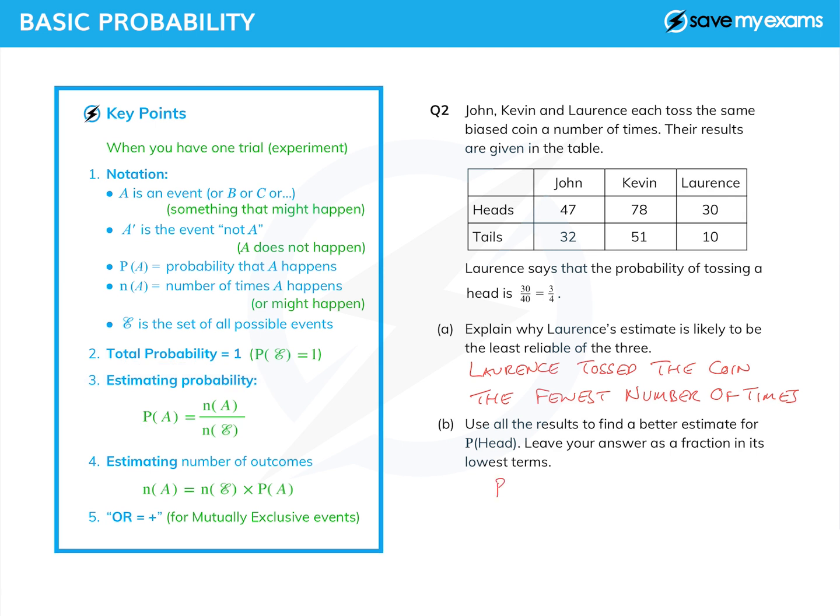So the probability of getting a head we can estimate to be the number of heads over the number of anything, which is, of course, heads and tails. Okay, or heads or tails, if you like. We're going to add these things together. Let's be consistent and call that or. So here we go.